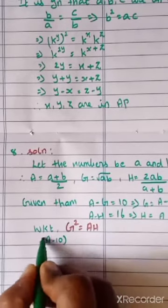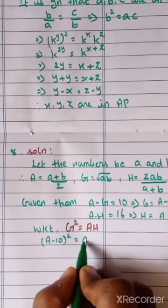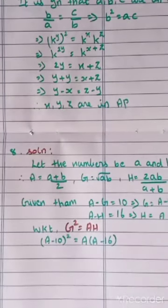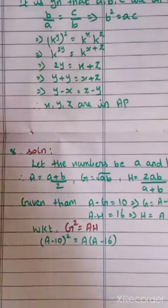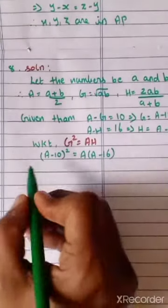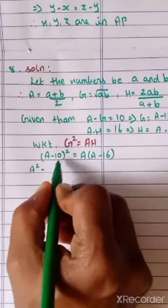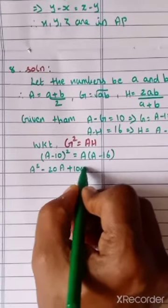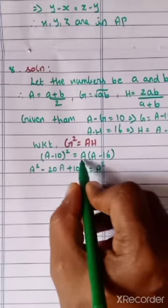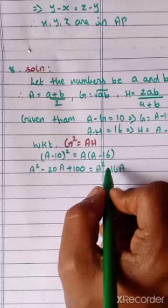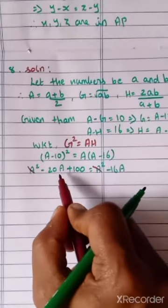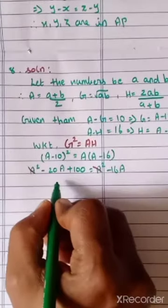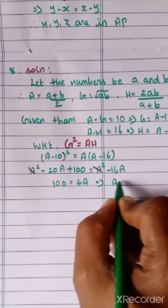G value is A minus 10, so (A minus 10) whole squared equals A times (A minus 16). We have to change all variables in terms of one variable A. Expanding A minus B whole squared: A squared minus 20A plus 100 equals A squared minus 16A. A squared cancels on both sides. Taking 20A to that side, you will get 100 equals 4A, that is A equals 25.